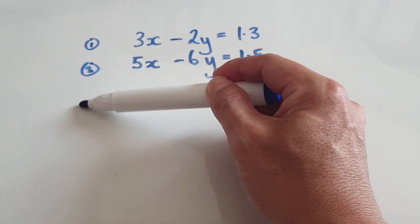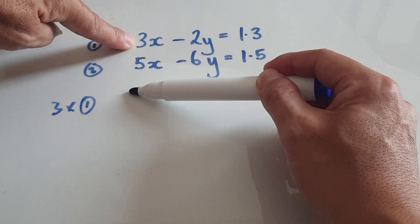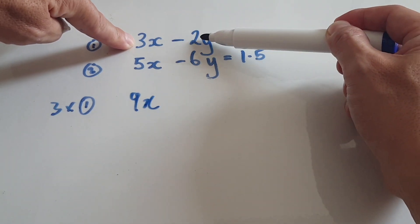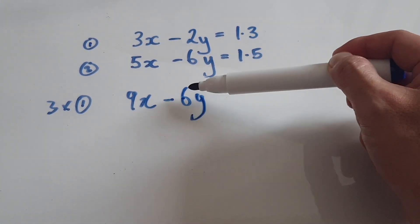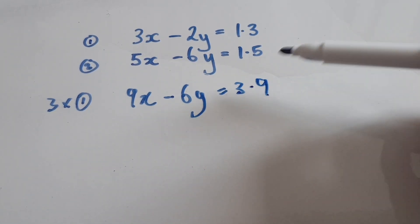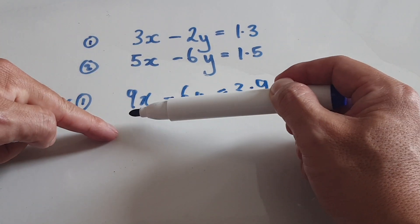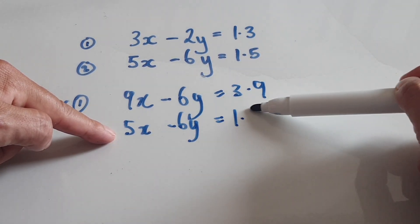So times equation 1 by 3, times everything by 3. So 3x times 3 would be 9x. This times 3 would be 6y. And then this times 3 would be 3.9. Let me just carry this down exactly the same here: 5x minus 6y equals 1.5.